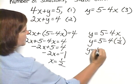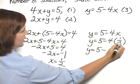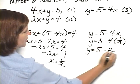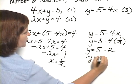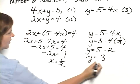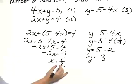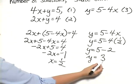y equals 5 minus 4 times 1 half would be 2, or y equals 3. I have the possible answer: x is 1 half and y is 3.